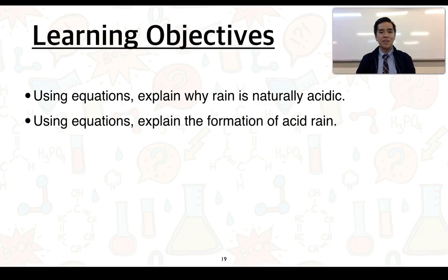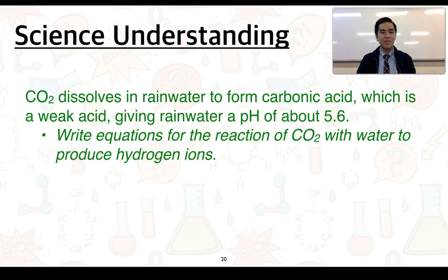In this second part, our learning objectives are going to be: using equations, explain why rain is naturally acidic, and also explain the formation of acid rain. The first objective relates directly to the science understanding about carbon dioxide and its ability to naturally dissolve in rainwater.